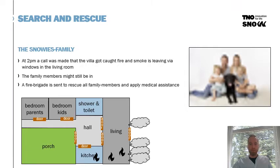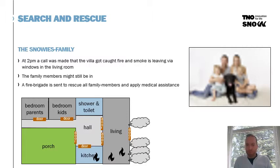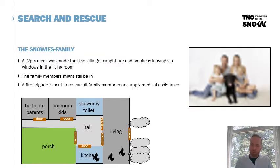The search and rescue case covers a family, the SNOW family, which is living in the villa as you see on the bottom left. They made a call at approximately 2pm that the villa caught on fire and that smoke is leaving via the living room. There might still be family members inside, and a fire brigade is sent to rescue all family members, including the dog, and also apply medical assistance.